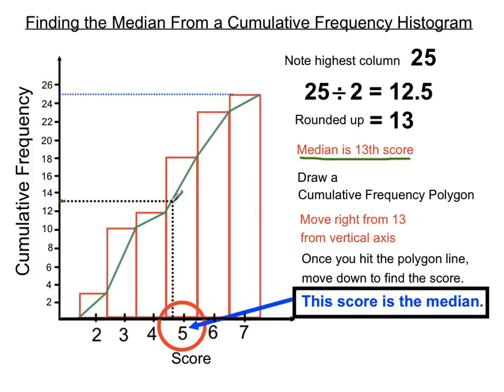But if we go across to the polygon, then go down, that section should identify the score that is the one we're looking for, for our median. The score there is five. That's our median.